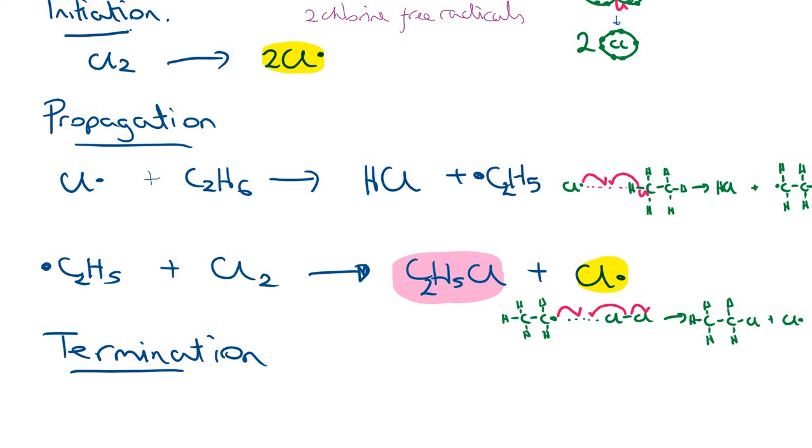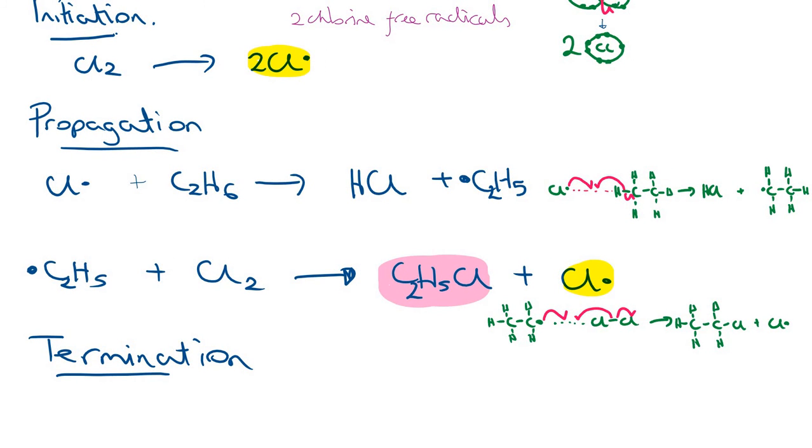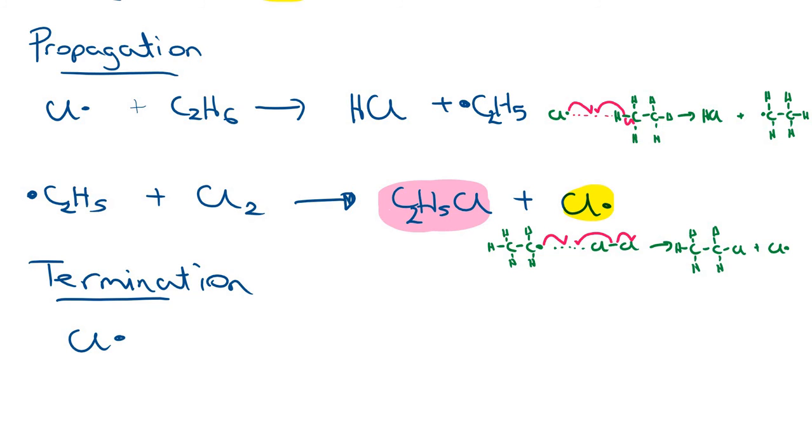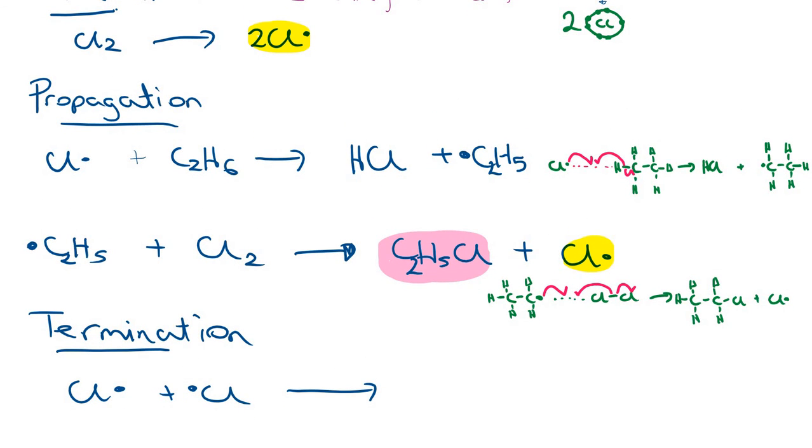In the termination steps, all that's going to happen is our free radicals are going to react with themselves, and you're going to be left with neutral molecules. The first one will be our chlorine radical could react with a chlorine radical, in the reverse of our initiation step, to form a chlorine molecule.